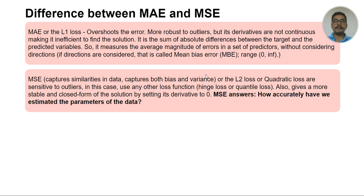When we talk about MSE, it captures the similarities in the data. You have both the bias as well as the variance in the model, so it will essentially help to estimate those things. You can also call it the L2 loss, sometimes called the quadratic loss because you have a squared term. They are sensitive to outliers, but MAE is not. In this case, you can use any other loss function like hinge loss—used in SVM, support vector machine—or quantile loss as well.